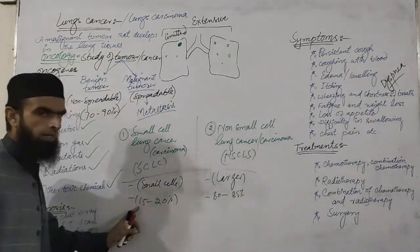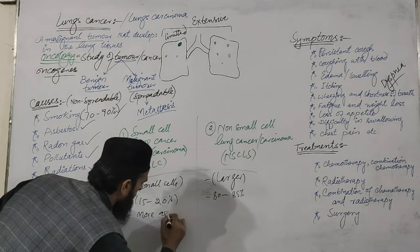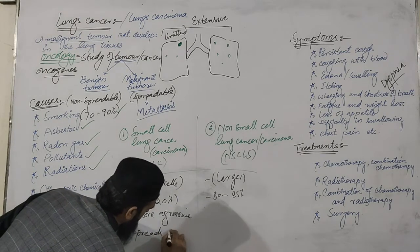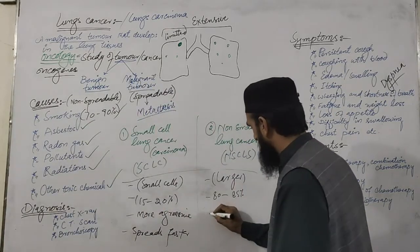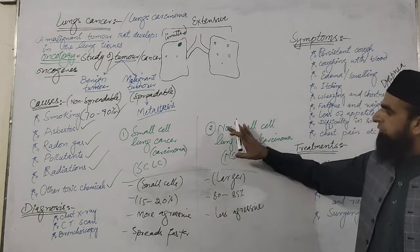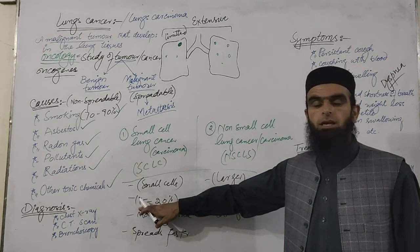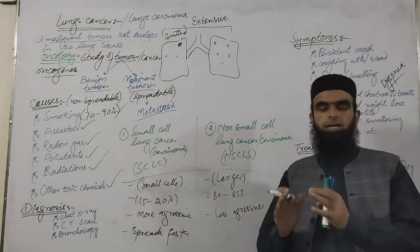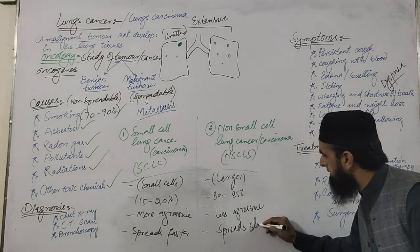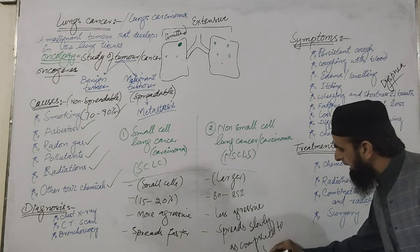Although small cell lung cancer occurs in a lower ratio, it is more aggressive and spreads faster compared to non-small cell lung cancer. Non-small cell lung cancer is formed in a higher ratio in the world but is less aggressive and spreads more slowly as compared to SCLC.